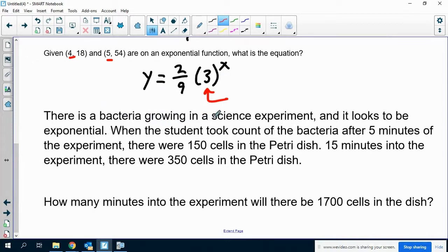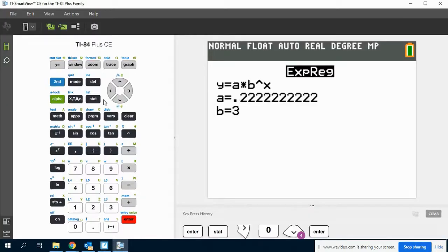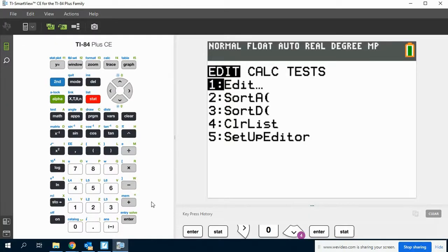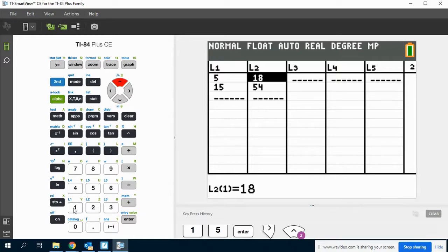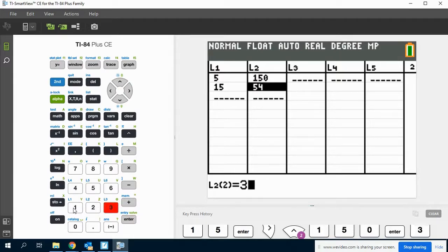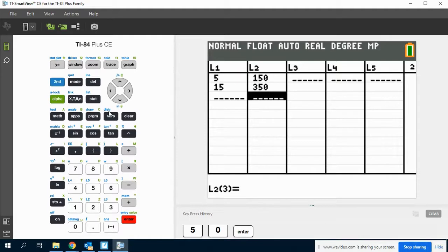One word problem. There's a bacteria growing in a science experiment, and it looks to be exponential. When a student took count of the bacteria after 5 minutes, there were 150 cells in the Petri dish. So 5, 150. And then 15 minutes, 350. So let's find an equation for this. So if we go to stat, edit, 5 and 15 are the minutes, 150 and 350 are the cells that are associated with those minutes.